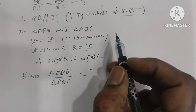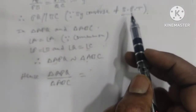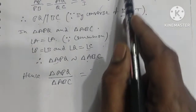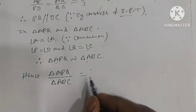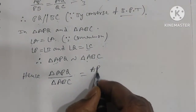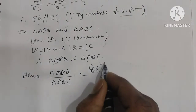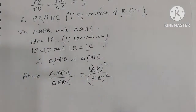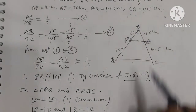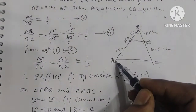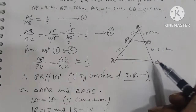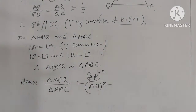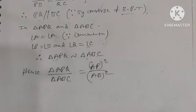Therefore, triangle APQ is similar to triangle ABC by the Angle-Angle (AA) similarity property. Hence, area of triangle APQ by area of triangle ABC equals the ratio of the squares of corresponding sides: AP² by AB².